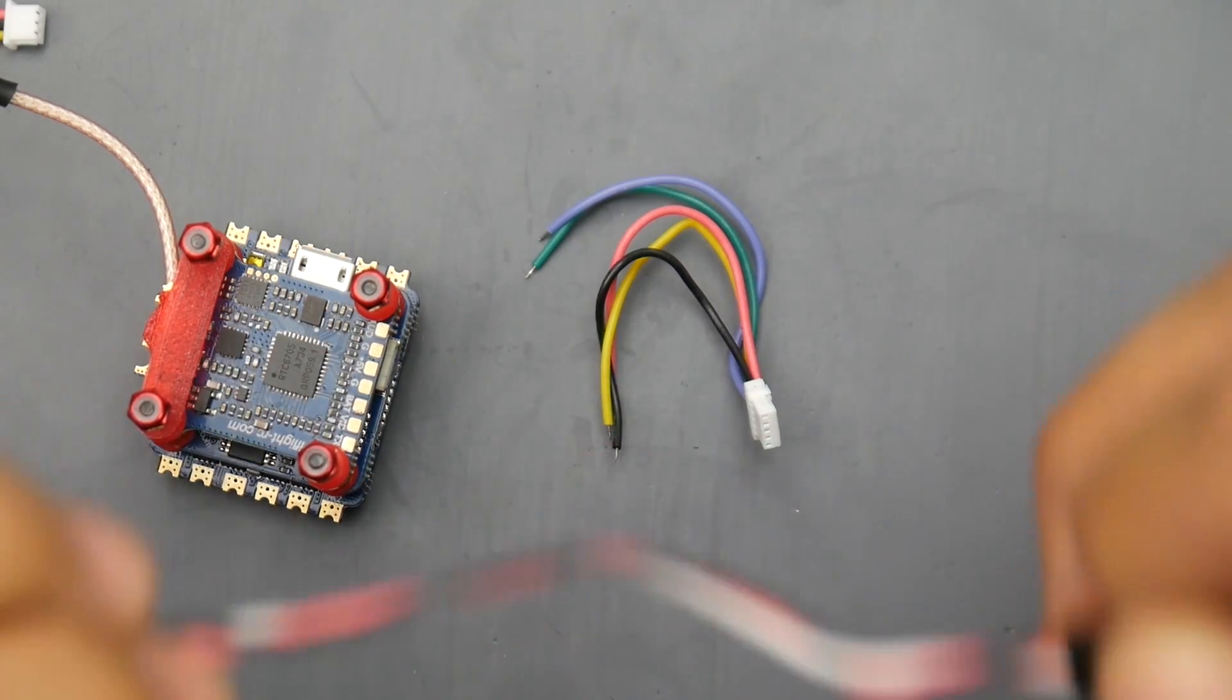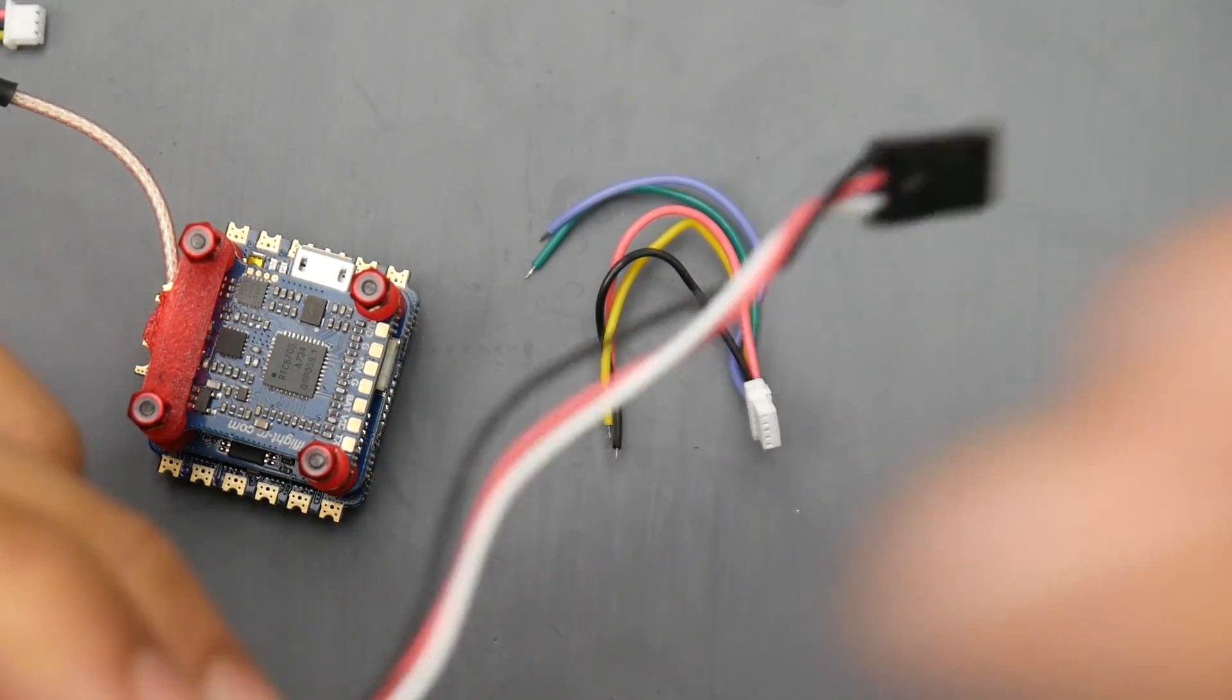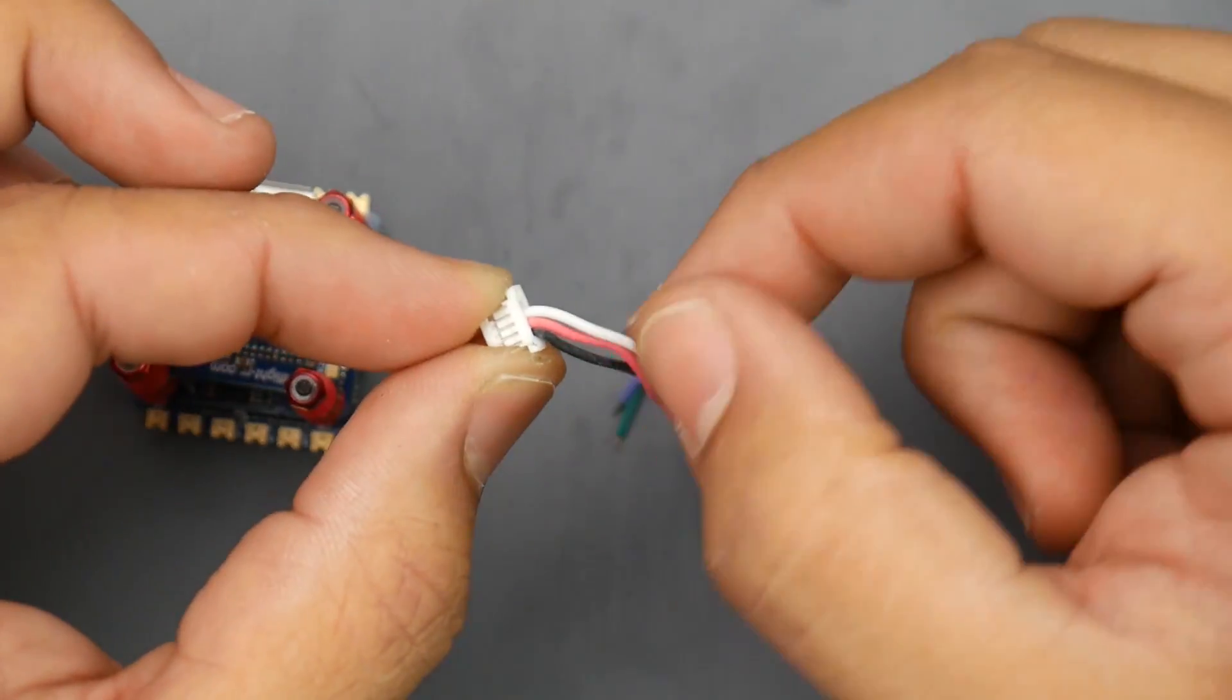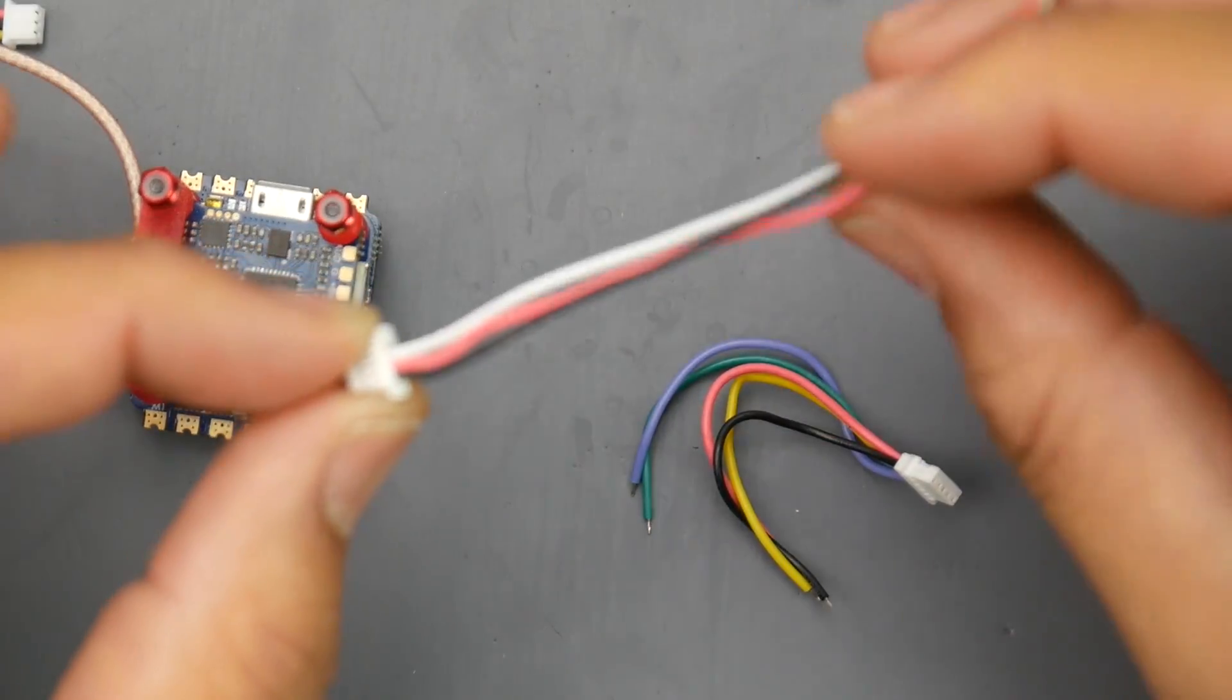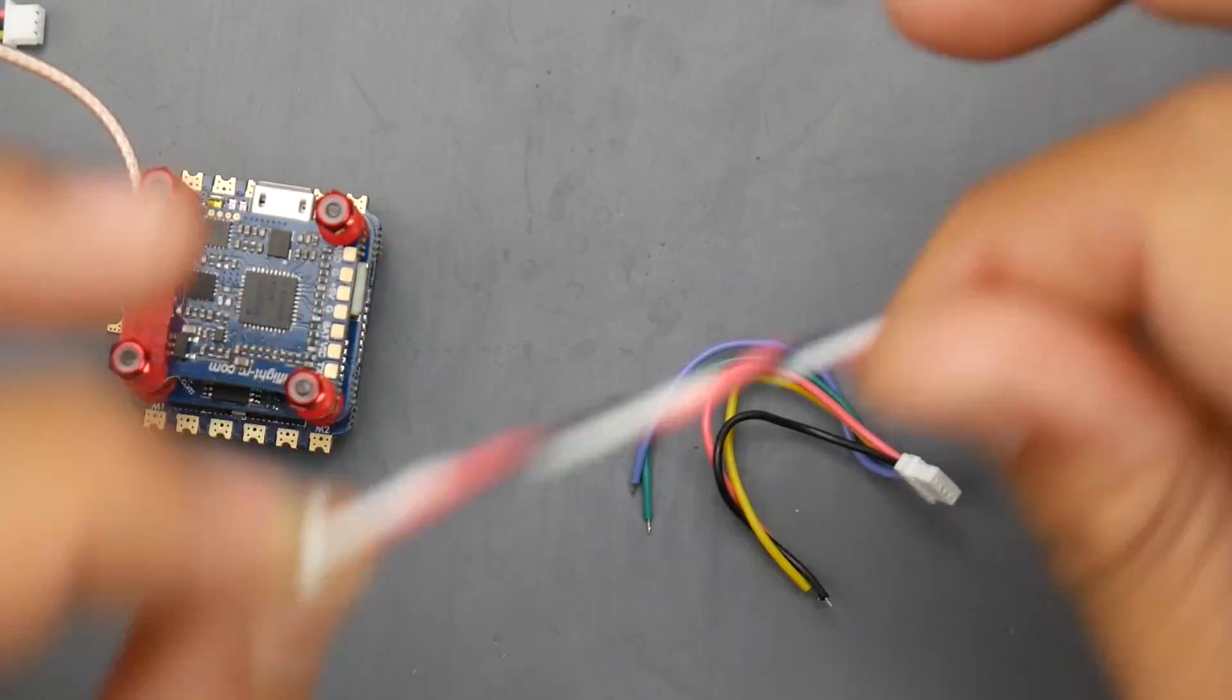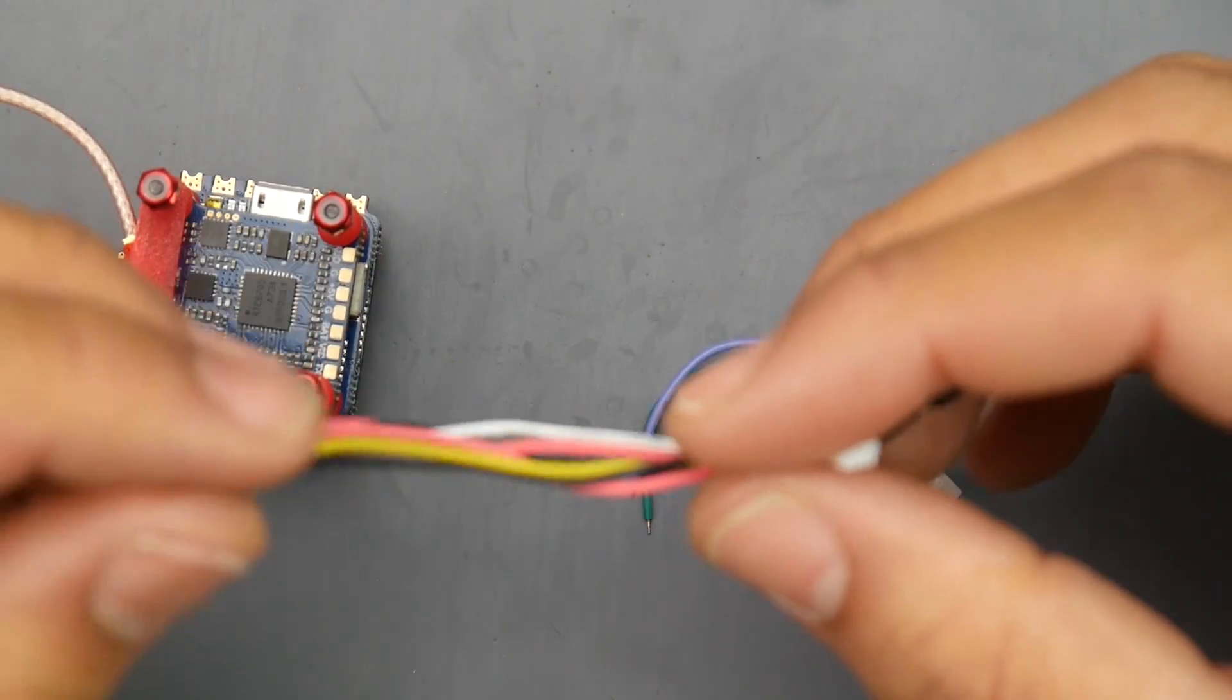This one would go to your receiver, but I believe this is a default SBUS setup here. And there is an extra hole in the connector if you can take a closer look here. So I think if you're running iBUS you would just switch this white wire over there. And this would output five volts, so make sure your receiver takes five volts. If you're Flysky or FrSky you have nothing to worry about. I think Spectrum is the only one that takes 3.3 volts.